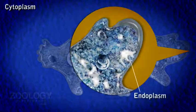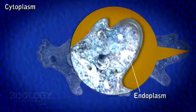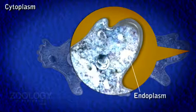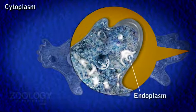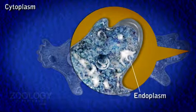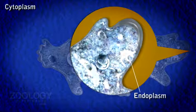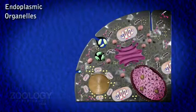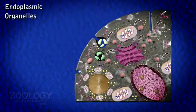Endoplasm. Completely surrounded by ectoplasm, the endoplasm forms the bulk of the animal. It is fluid-like, granular and semi-transparent. As the ectoplasm is under tension, the endoplasm must also be under pressure from the ectoplasm. Under the light microscope, a number of organelles are visible. They are found within the endoplasm.